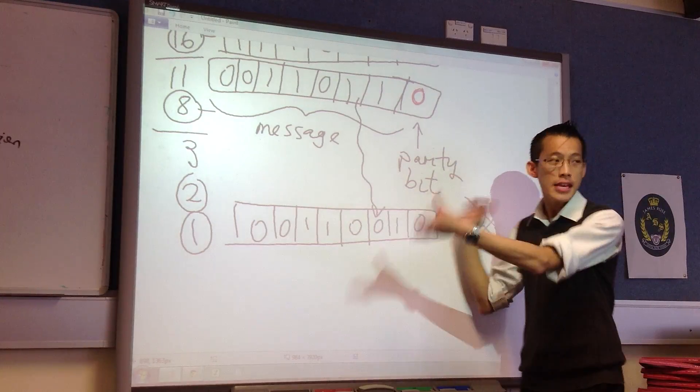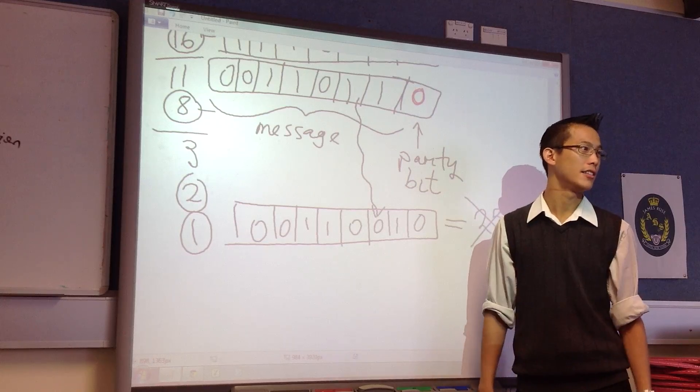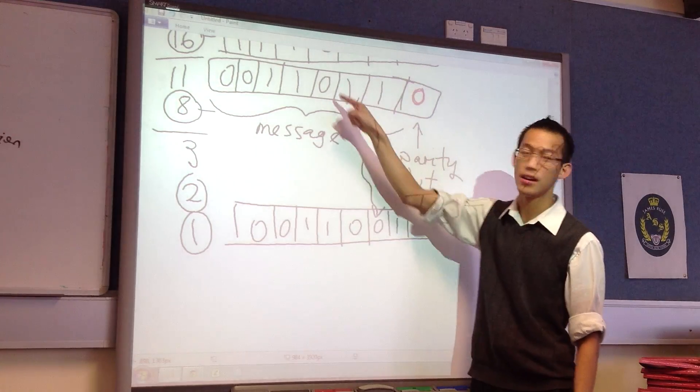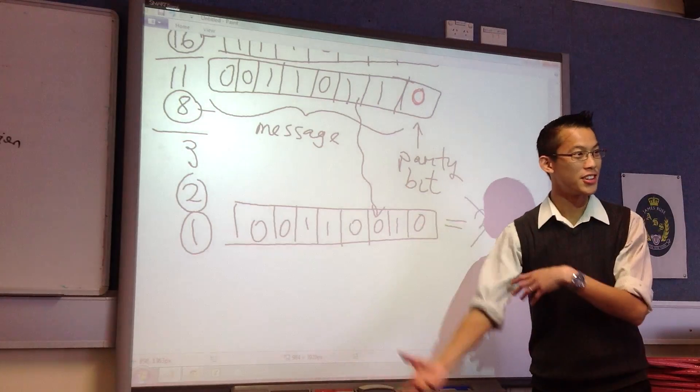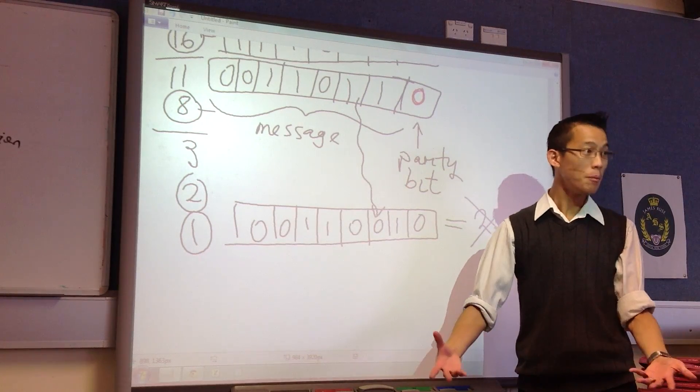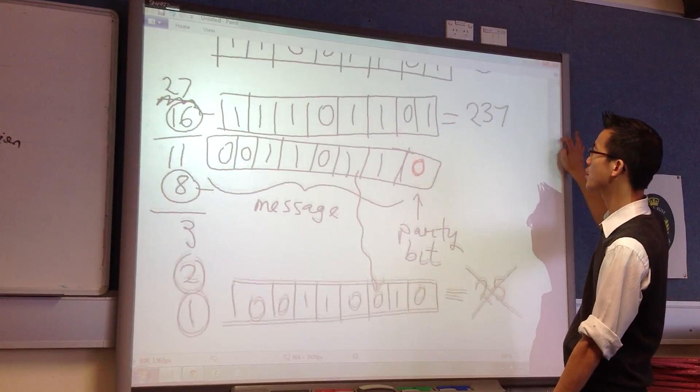So this is what we call even parity, because I always wanted an even number of 1s. You can imagine there's another version of this, which is odd parity. So this is even.